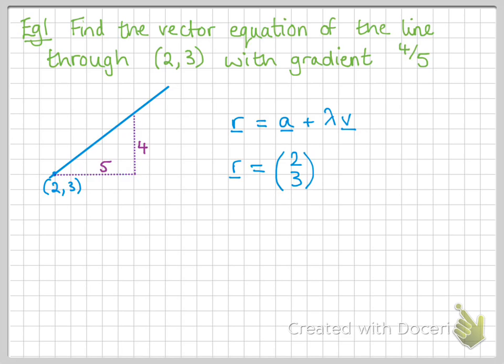So, our point is 2, 3, so we put that down as a vector, and our direction is 5, 4. So, that's the vector that gives us the direction of how we're moving away from that point 2, 3. Lambda is the constant that would tell us how far to move along that line.